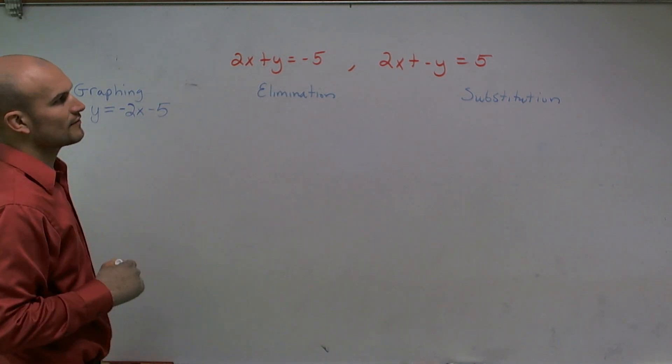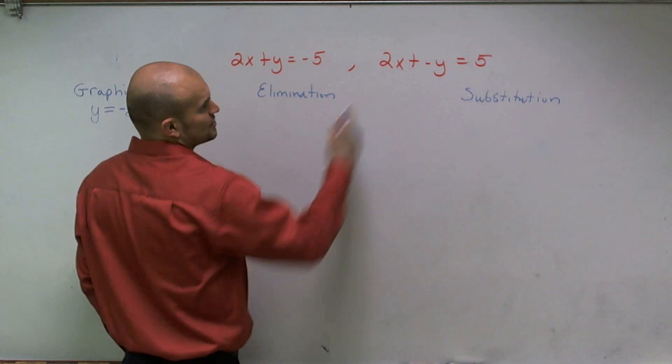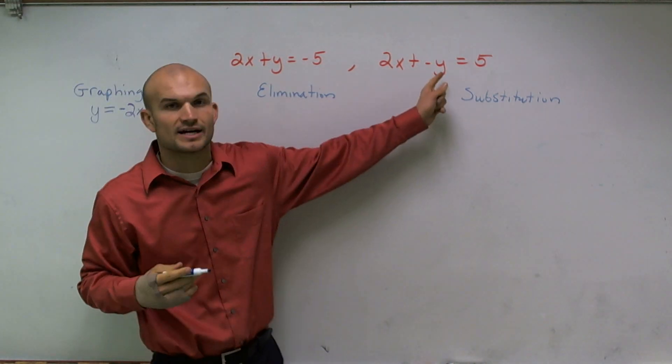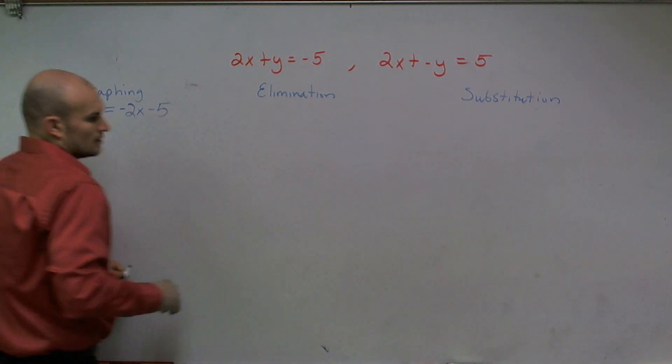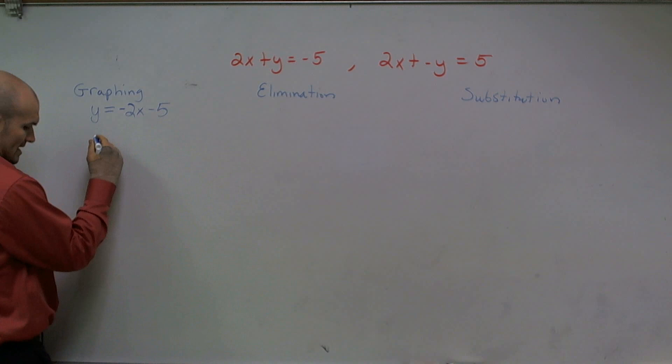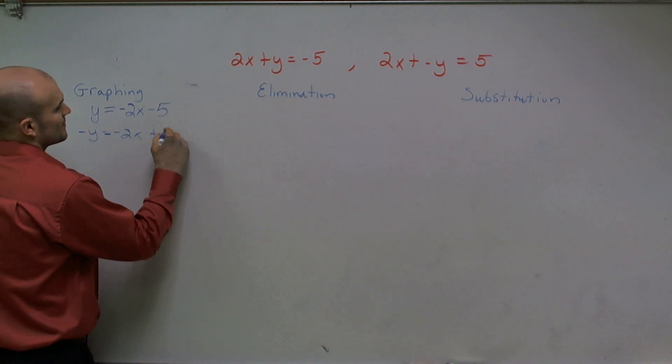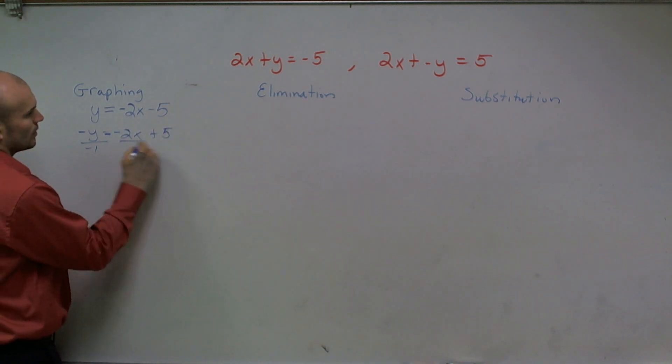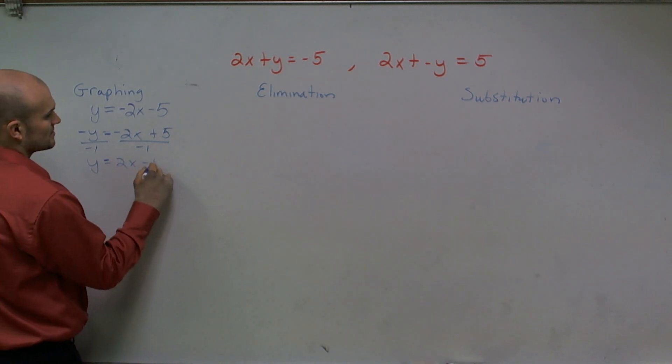And then to solve that one for x, I subtract the 2x. And then I'm going to have to divide by negative 1 on both sides. I'll subtract 2x, so I have negative y equals negative 2x plus 5. Then I have to divide by negative 1. So really my answer is y equals positive 2x minus 5.